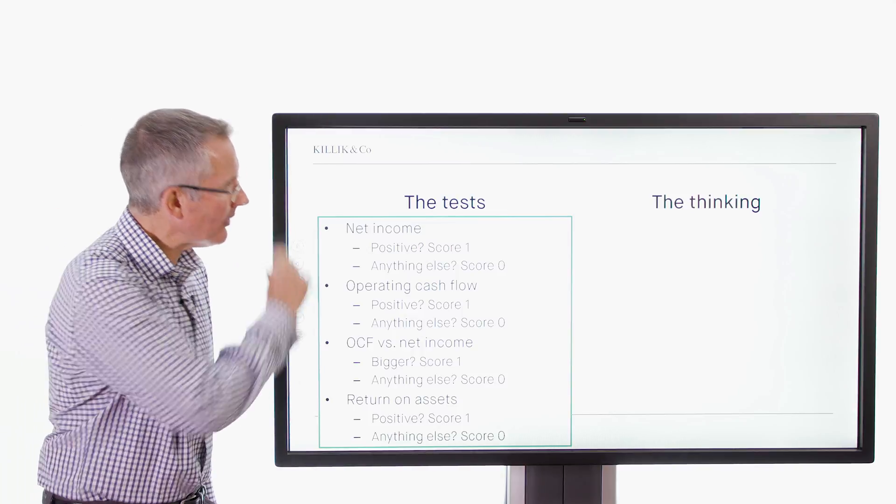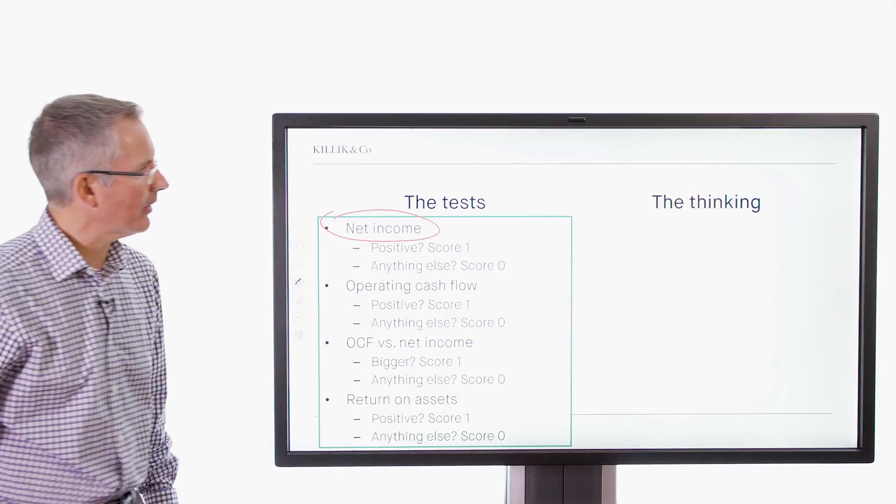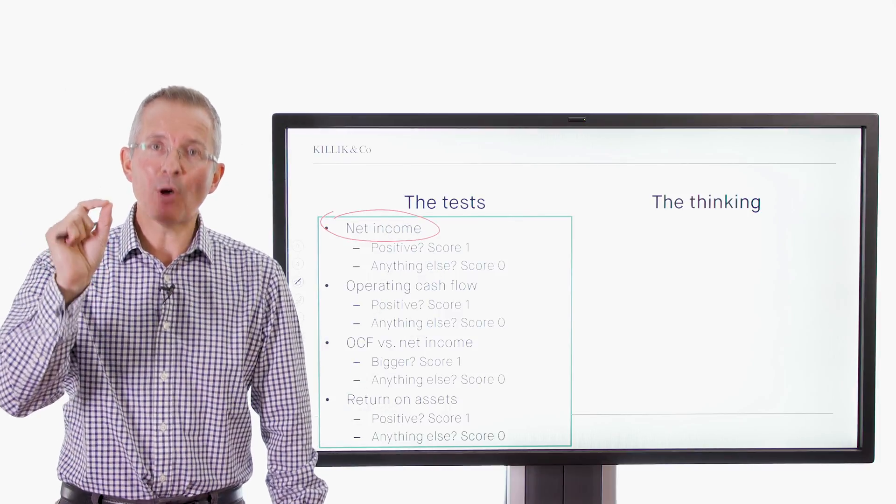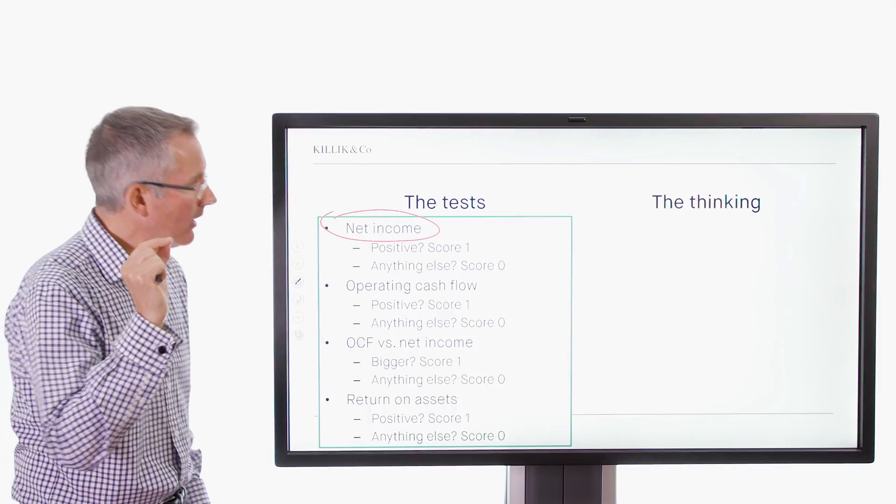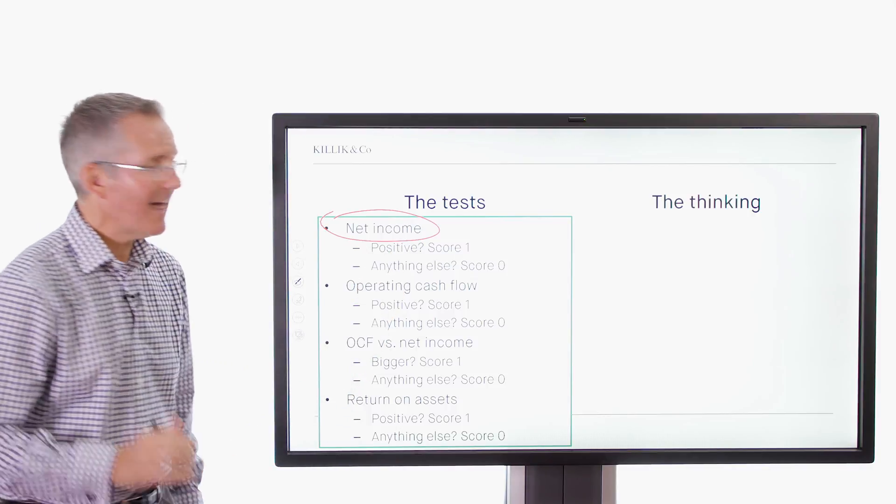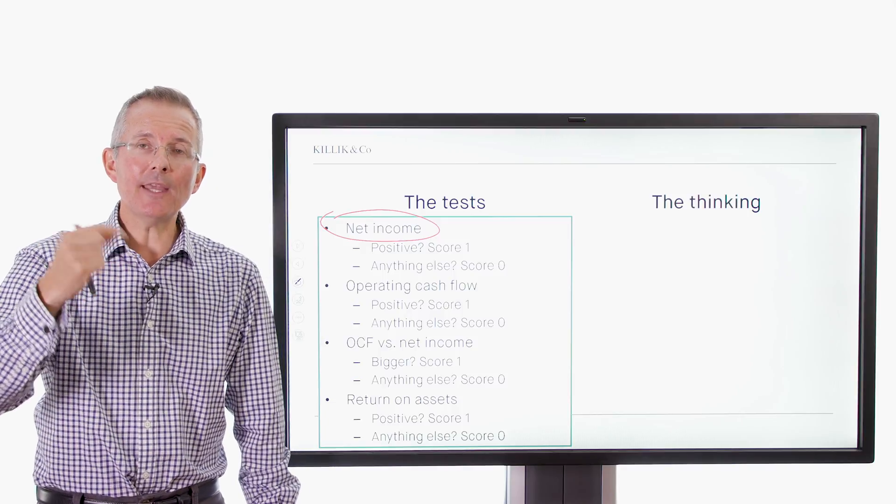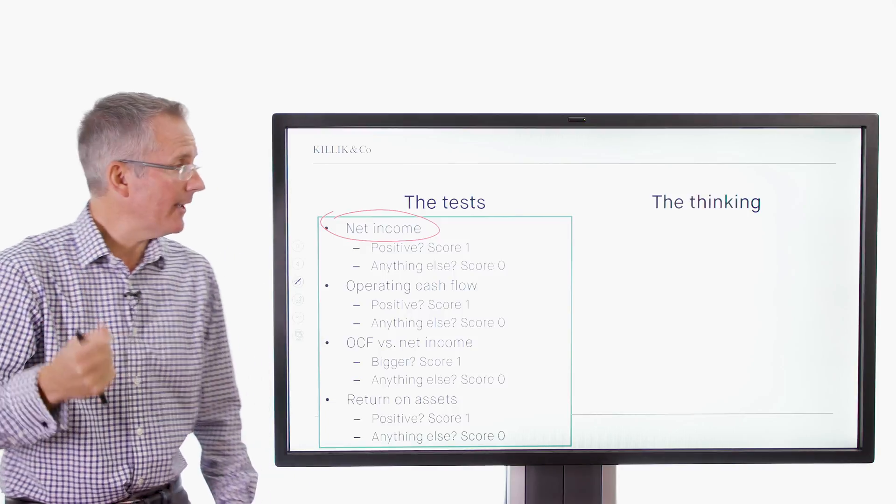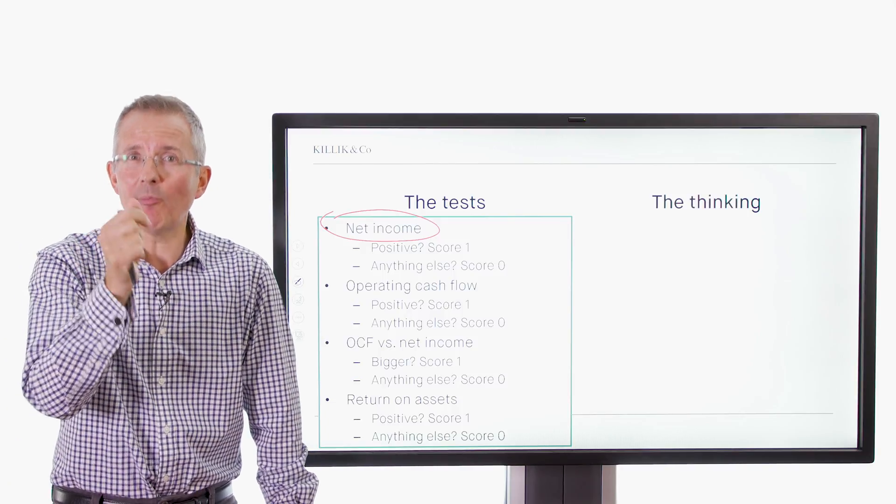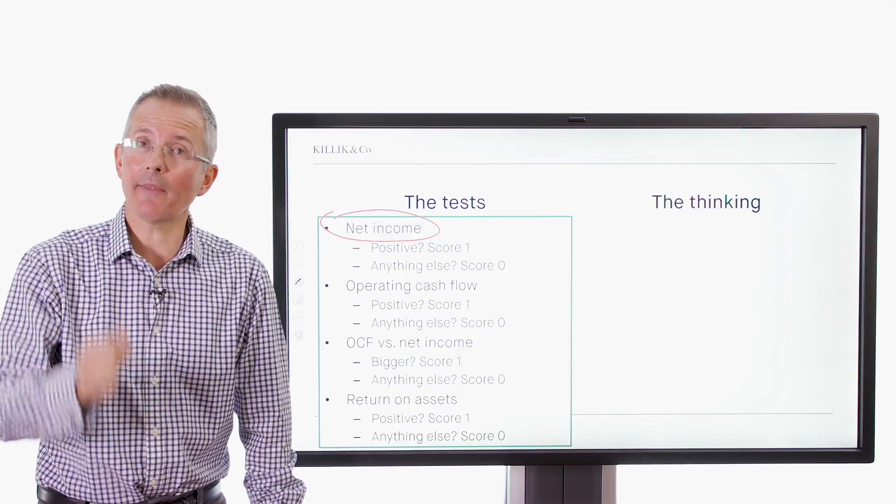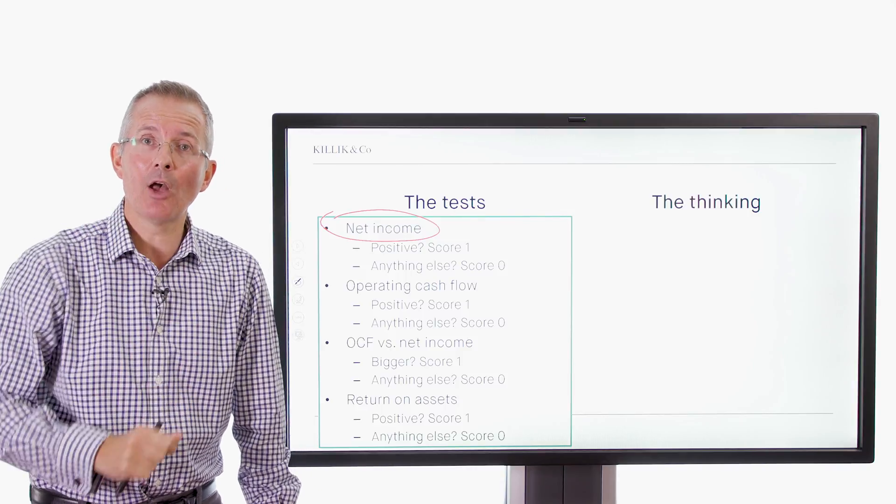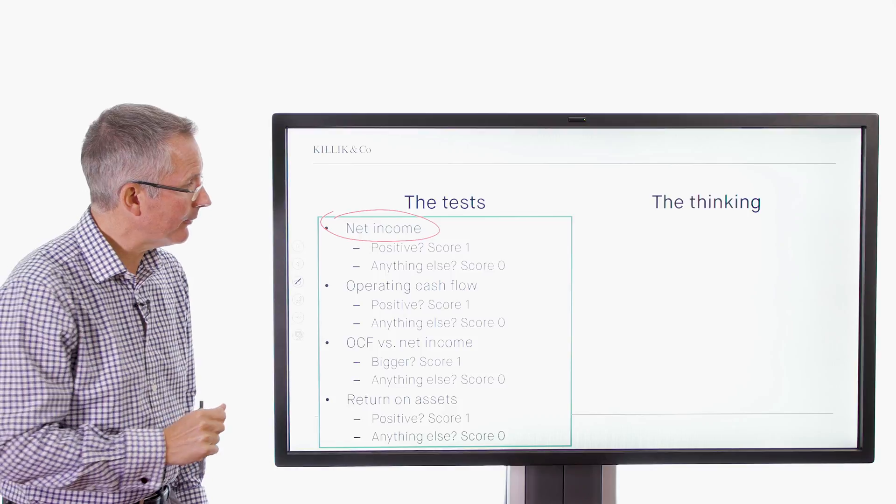So net income is the first test, looking at the profit and loss account. Very simple system. Positive net income in the last report, score one. Anything else, i.e. zero or negative, score zero. So these tests don't scale in the sense that even if you've got very small but positive income, you get a point. And that, some people say, is a criticism of this system. But nonetheless, there it is.